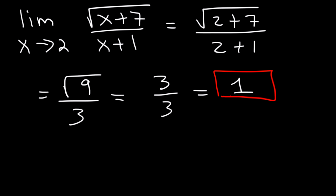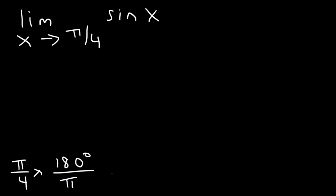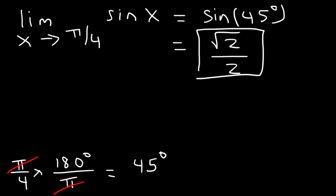Direct substitution is a nice, simple, and easy technique to use. What is the limit of this trigonometric function — sin x as x approaches pi over 4? Pi over 4 in degrees is 45, since multiplying by 180 over pi gives 180 divided by 4 equals 45. So what is sin 45? Using the unit circle, it's equal to the square root of 2 divided by 2.